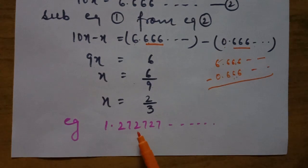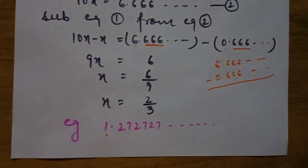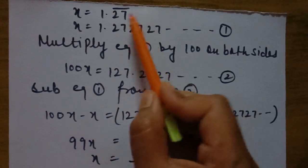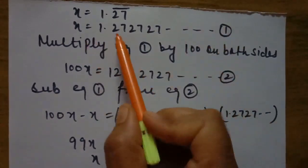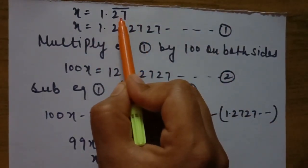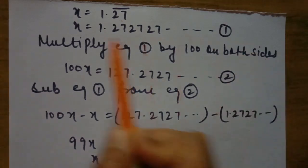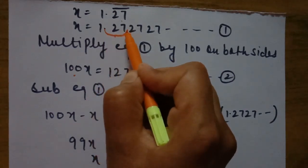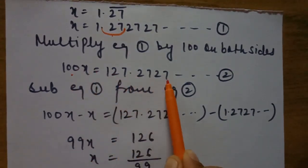Another example: 1.272727... meaning digits 2 and 7 are repeating. One difference from the previous question: here we have 1 on the left side of the decimal, not 0. Let x = 1.27̄. How many digits are under the bar? Two — so multiply equation one by 100 on both sides. This shifts the decimal two places: 100x = 127.2727...